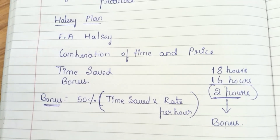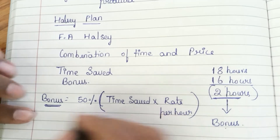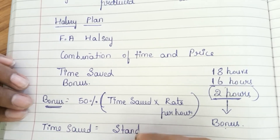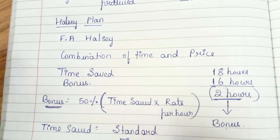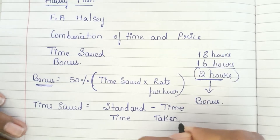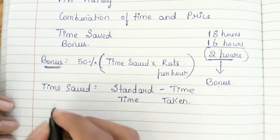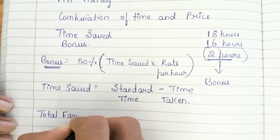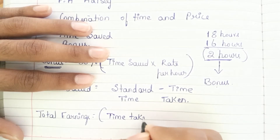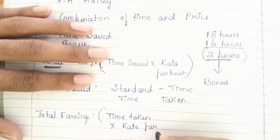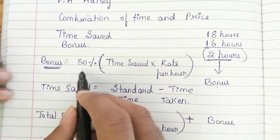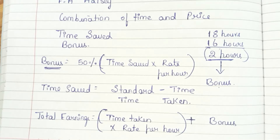This bonus formula is for the Halsey plan. The formula for total earnings under Halsey is: time taken multiplied by rate per hour, plus bonus. The bonus is nothing but 50% of time saved multiplied by rate per hour.